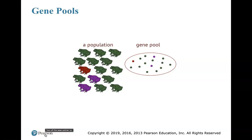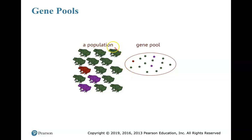You've heard me use this term — let's go ahead and explain what a gene pool is. If you know what a population is, you know what a gene pool is. A population is a set of individuals of the same species that live in the same area and interbreed.